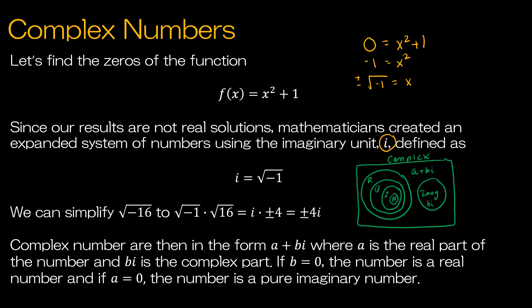Let's make sure we understand how to simplify with imaginary numbers. If I had something like the square root of negative 16, I could simply split that into two factors: negative 1 and 16. The square root of negative 1 is i, the square root of 16 is plus or minus 4, and so my answer is plus or minus 4i.